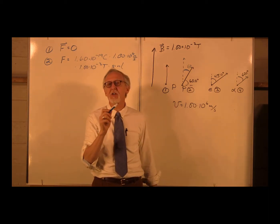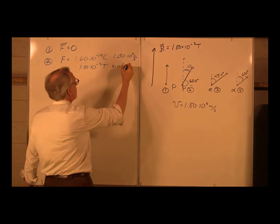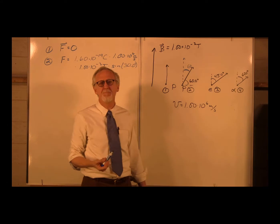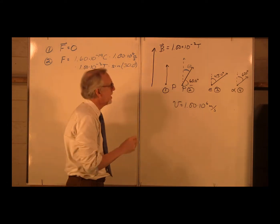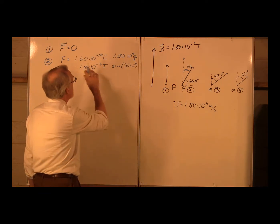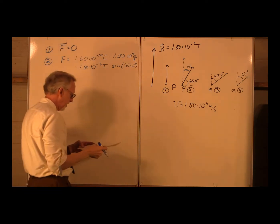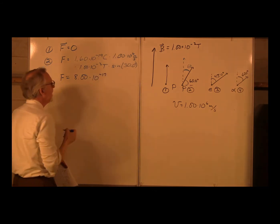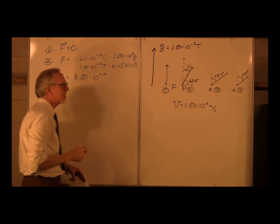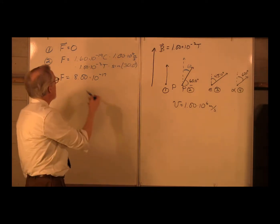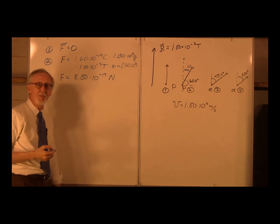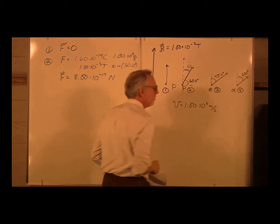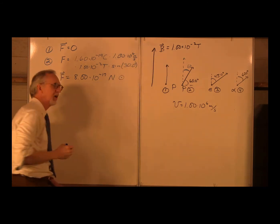In order to use an equation, you have to remember how every term in that equation is defined. Theta in this problem is 30 degrees — that's a tricky one, and yes, something like that would appear on a quiz or exam. Remember: theta is the angle between V and B. Multiplying everything out, the magnitude of the force is 8 times 10 to the minus 17 Newtons. For direction, applying the right-hand rule with V and B, the force is out of the page.